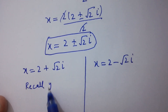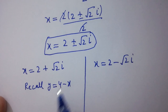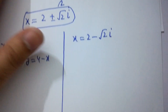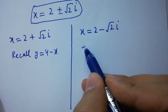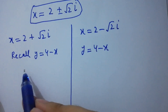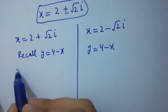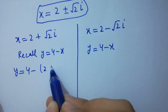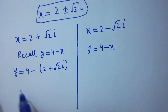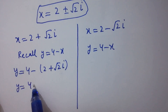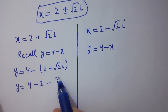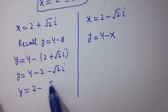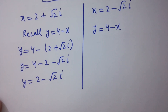Recalling the third equation: y equals 4 minus x. For x equals 2 plus square root of 2i, we get y equals 4 minus (2 plus square root of 2i), which gives y equals 2 minus square root of 2i.